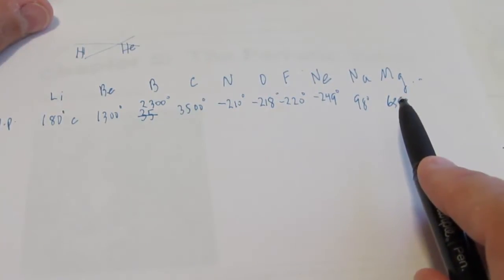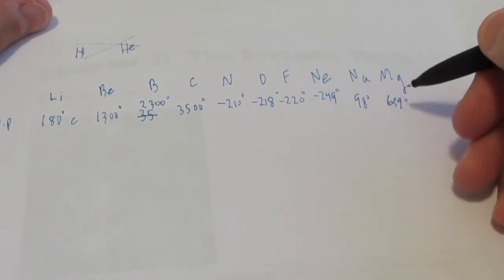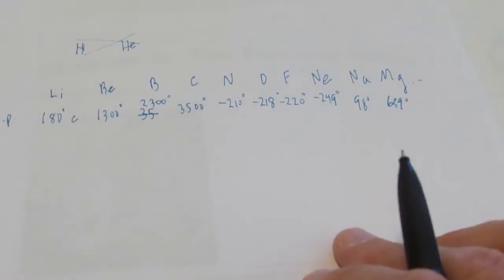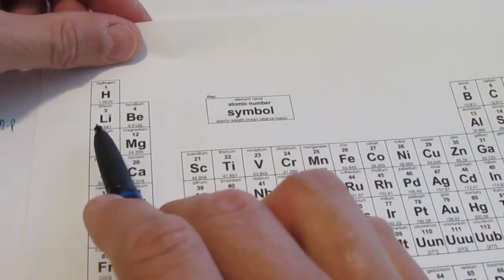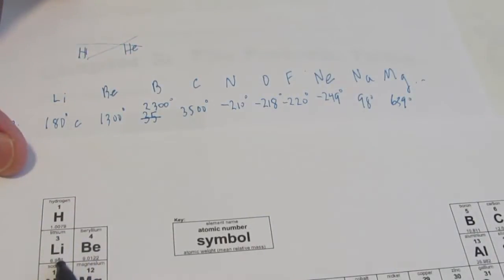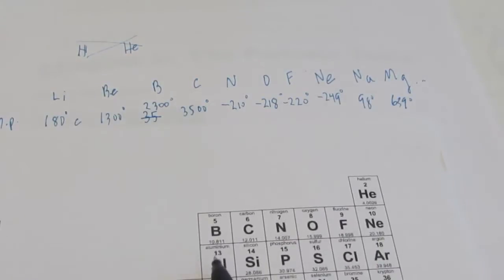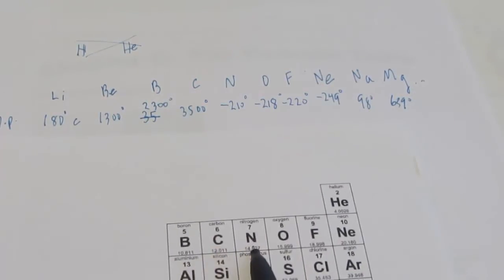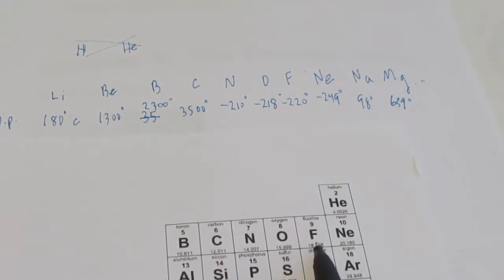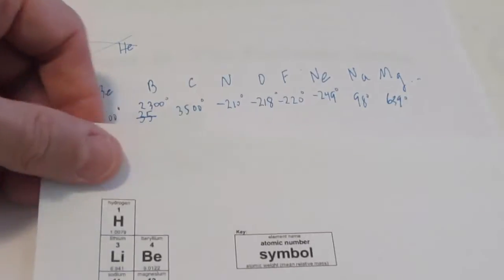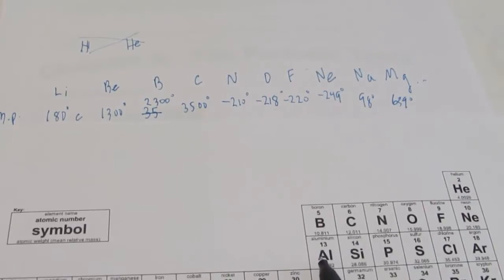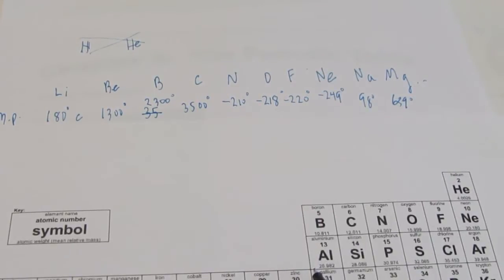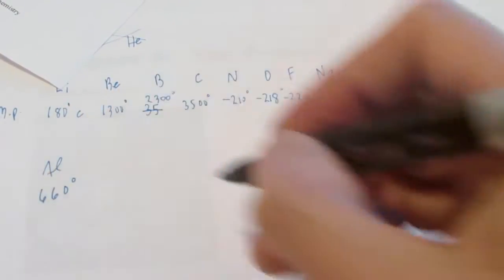And magnesium is considerably higher than sodium. What would you expect the melting point of aluminum to be? Would you expect it to be higher than magnesium or lower? Well, think about patterns. Take a look at lithium on our periodic table. It's located on the far left. It had a melting point of 180, then 1300, then boron 2300, carbon 3500, nitrogen negative 210, negative 218, negative 220, negative 249, then sodium at 98, magnesium 639. What do you think about aluminum? If you said that it would increase, you are correct. Aluminum's melting point is 660 degrees Celsius.